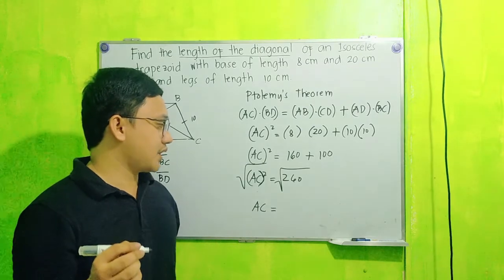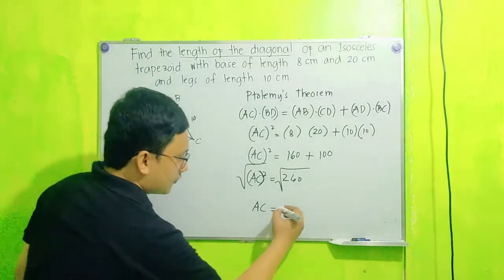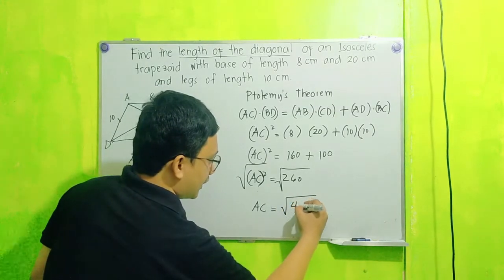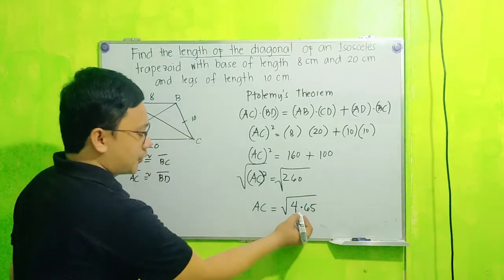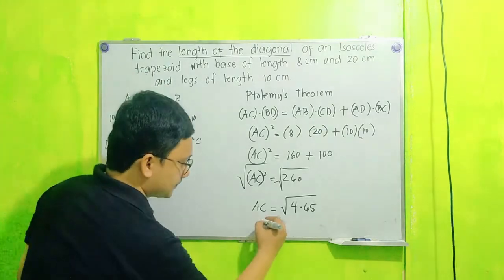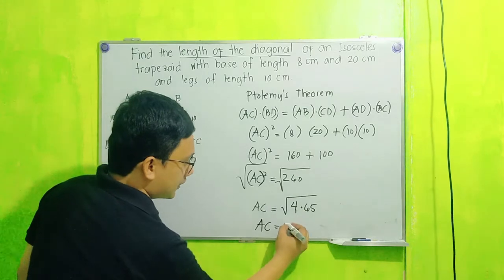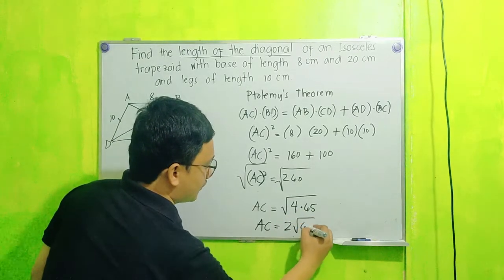Pero merong factors nyan which one of the factors is a perfect square. So kunin mo natin yung factors ng 260, that is 4 times 65. So getting the square root of this, AC now is equal to square root of 4 that is 2, square root of 65 that is square root of 65.